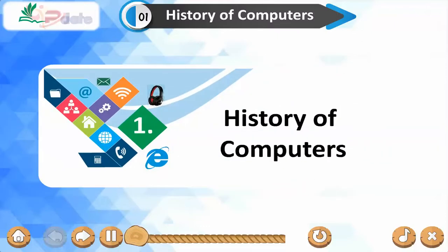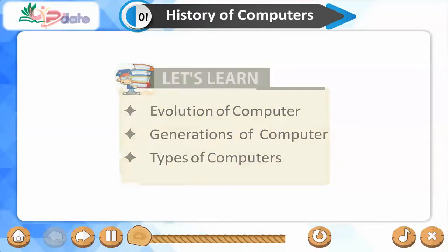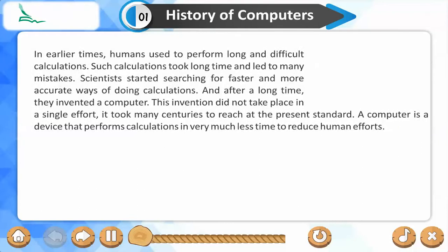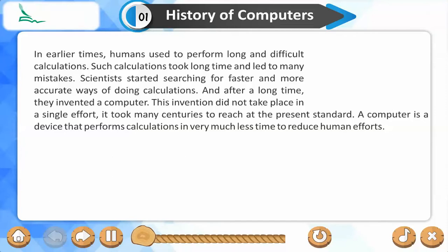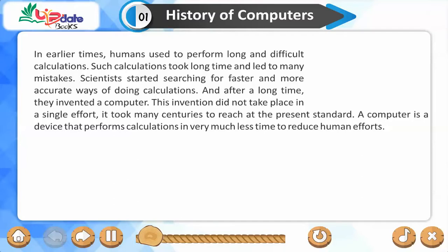Lesson 1: History of Computers. Let's learn about the Evolution of Computers, Generations of Computers, and Types of Computers. In earlier times, humans used to perform long and difficult calculations. Such calculations took a long time and led to many mistakes. Scientists started searching for faster and more accurate ways of doing calculations, and after a long time, they invented a computer. This invention did not take place in a single effort — it took many centuries to reach the present standard. A computer is a device that performs calculations in very much less time to reduce human efforts.